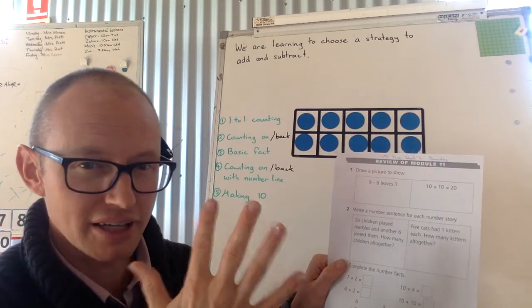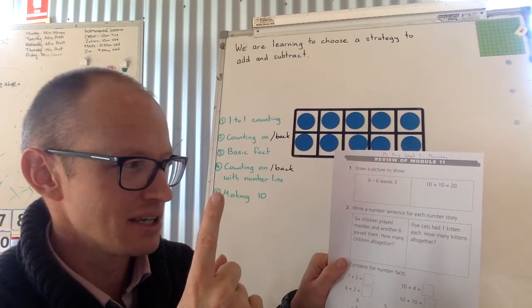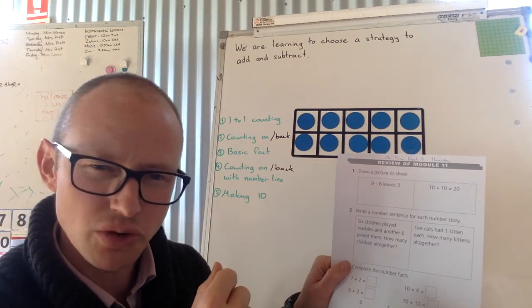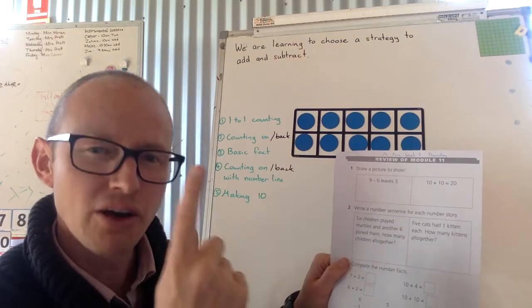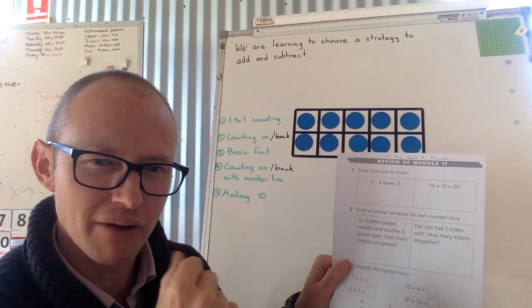Five cats. Okay. Had one kitten each. How many kittens all together? Five cats. One kitten each. How many kittens all together?